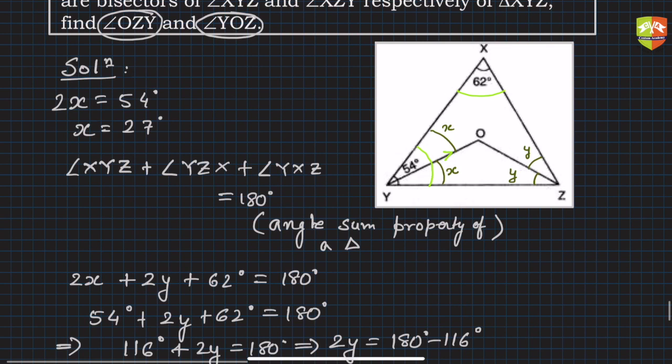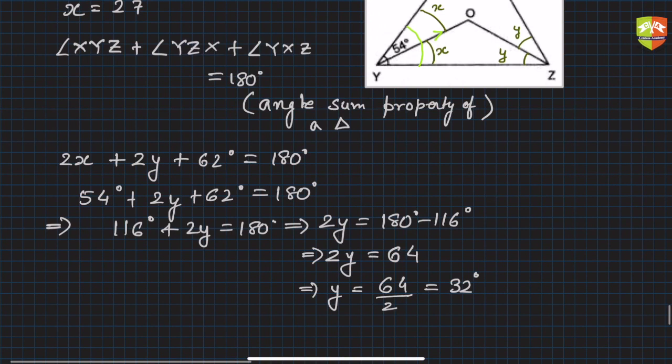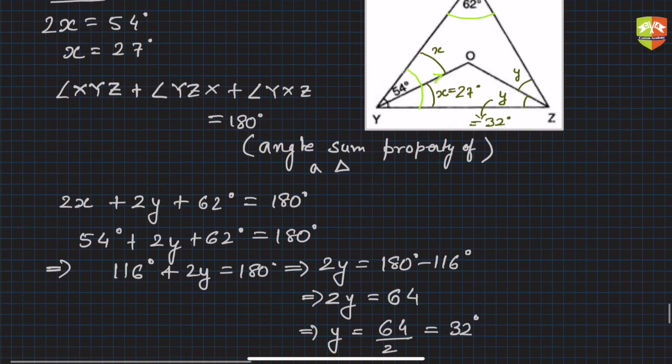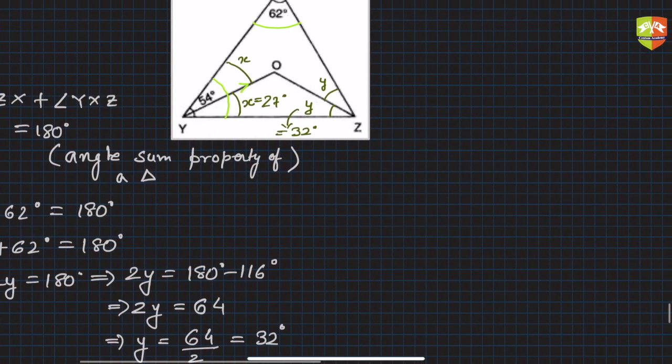Hence y is 64 divided by 2, that means 32 degrees. So y is 32 degrees, that's what we wanted to find out for OZY. So x is 27 and y equals 32.